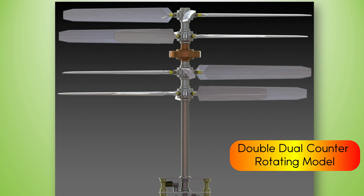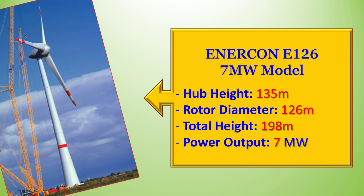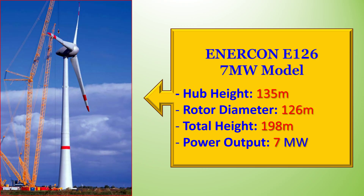This model is for large-scale wind turbines, and it's very useful in many ways. The picture shown on the left is the Enercon E126 model. Hub height is 135 meters, rotor diameter is 126 meters, total height is 198 meters, and the power output is 7 megawatts.